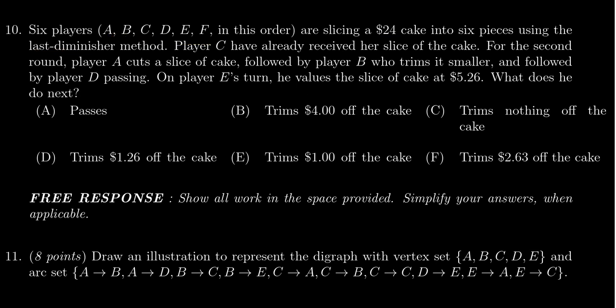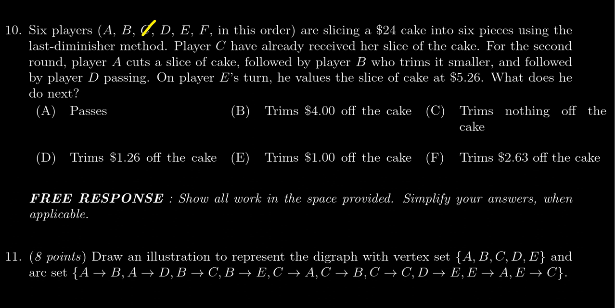So this is the game that's been played so far. We're in the middle of the game. Player C has already received her slice, so she's no longer in consideration. That would happen in the first round, so the first round Player C got her cake, now she's done. Now in the second round, Player A cut a slice of the cake because he's the one who goes first. Player B then trimmed the cake smaller, and then since there's no C in such a situation, it went to Player D. Player D passes.